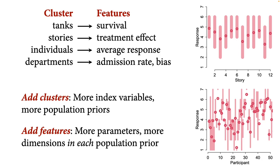When you add features, you add parameters — sometimes quite a lot of parameters, hundreds or thousands or tens of thousands. This means there are more dimensions in each population prior because there are more aspects of each cluster which can vary. This leads to additional complexity and additional interpretation issues. So I'm going to slowly move through an example which I'll build over this lecture and the next to help you understand this engineering and why it's really useful for research.